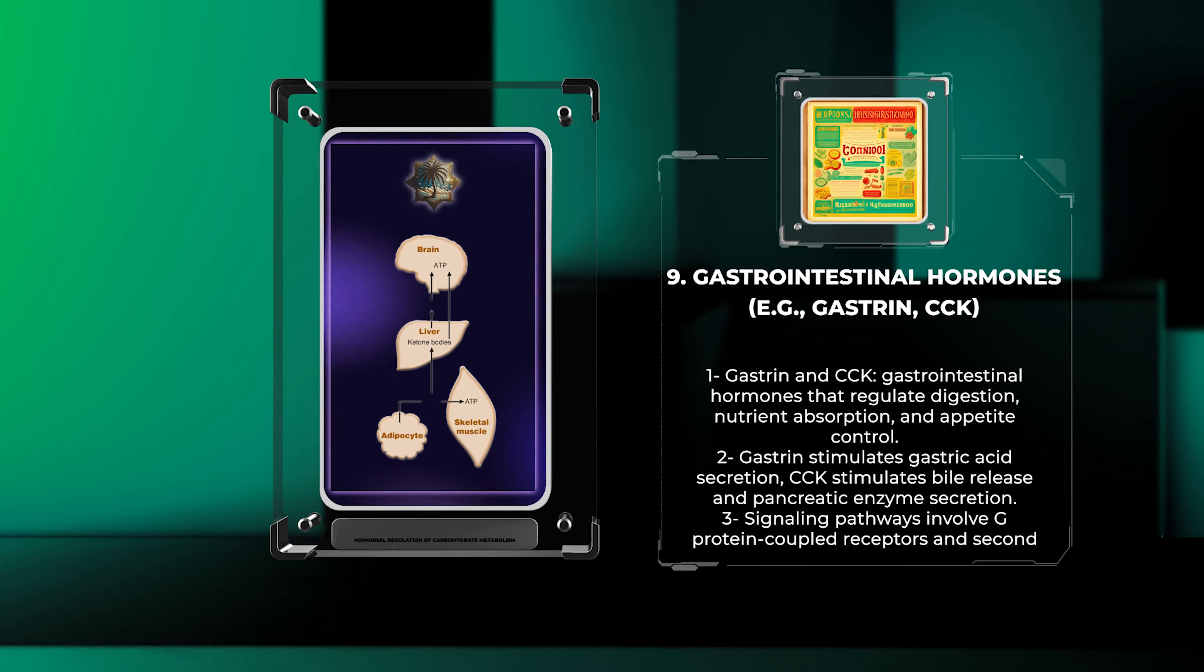Estrogen and testosterone are sex hormones that regulate reproductive function, sexual development, and secondary sexual characteristics. Estrogen, predominantly produced by the ovaries, exerts its effects through estrogen receptors, influencing gene expression and cellular processes.